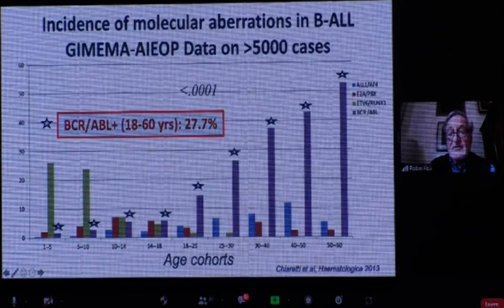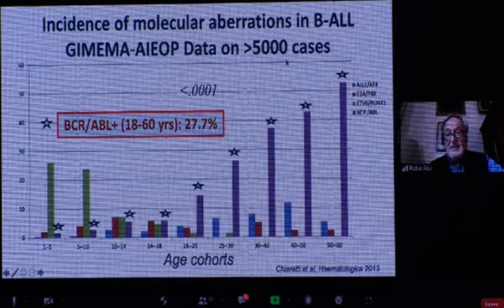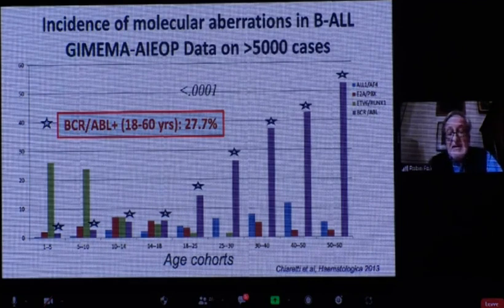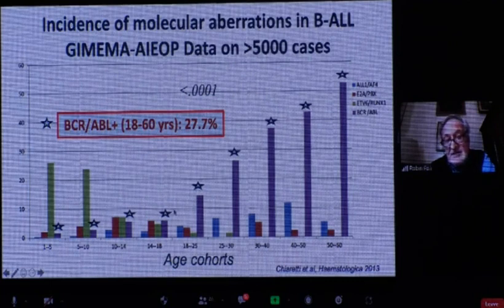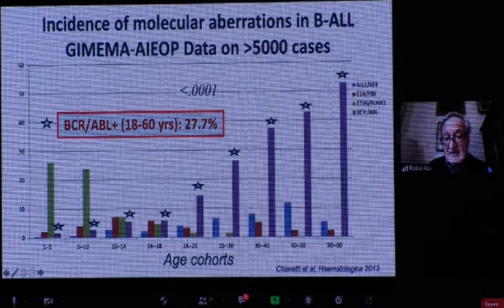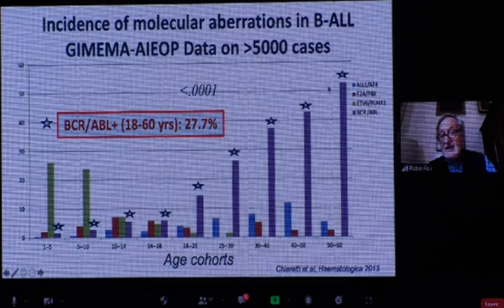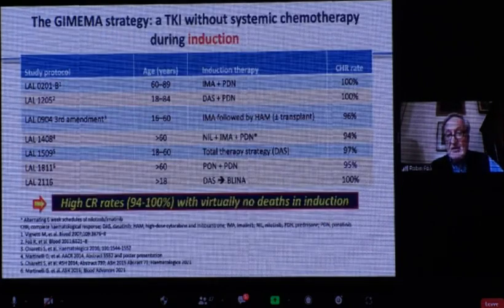This data comes from over 5,000 ALL cases in Italy, including children and adults from the two major databases. The message — seen in the purple columns — is that Philadelphia-positive ALL increases with age. We used to say rare in children and about 25–30% in adults, but it's very different: in young adults aged 18–25, it's lower, while in individuals aged 50–60 or older, about one in two patients carries the BCR-ABL fusion. This is a key point when TKIs are available.